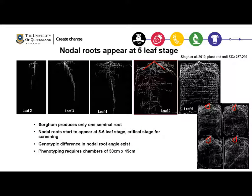This photograph shows root development pattern of sorghum starting from leaf two to leaf six stage. Unlike other cereals, sorghum produces only one seminal root, and the first pair of nodal roots starts to appear around the five-leaf stage. We found that there were significant differences in nodal root angle between the four genotypes, so nodal root angle was considered an important root trait for root screening.